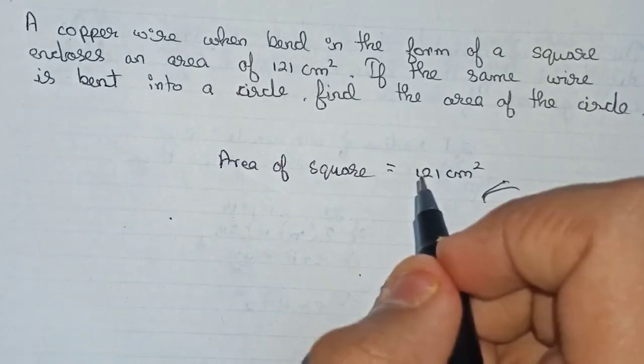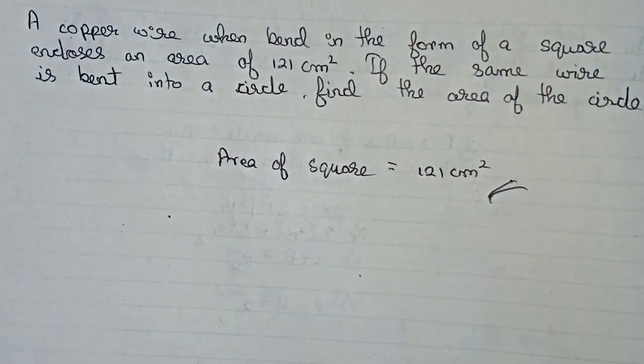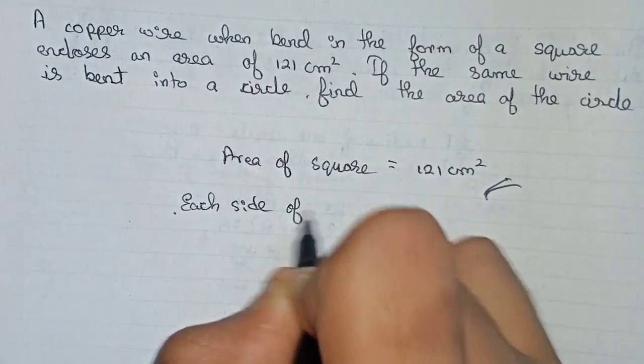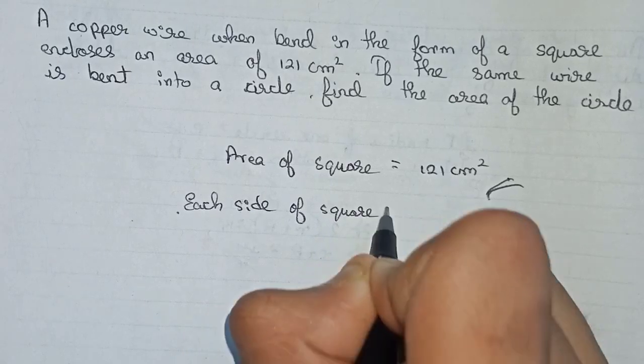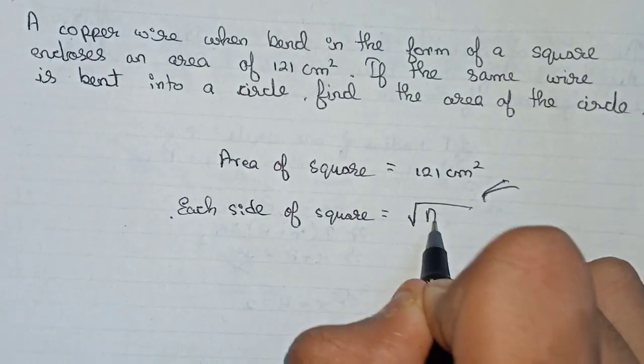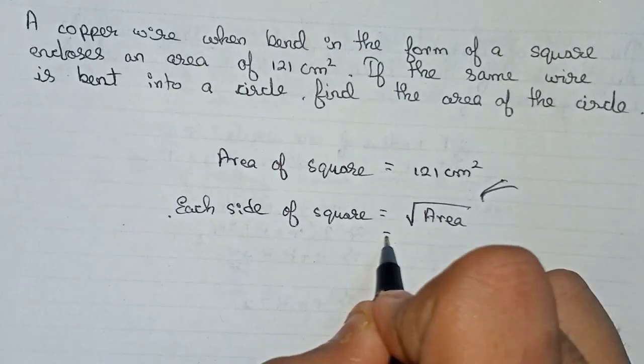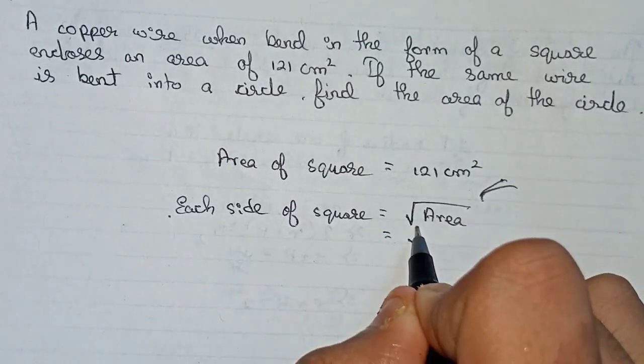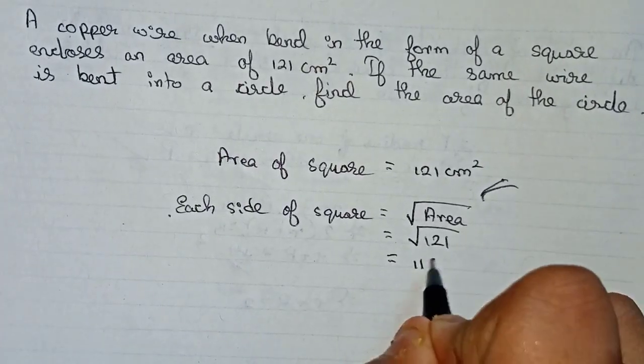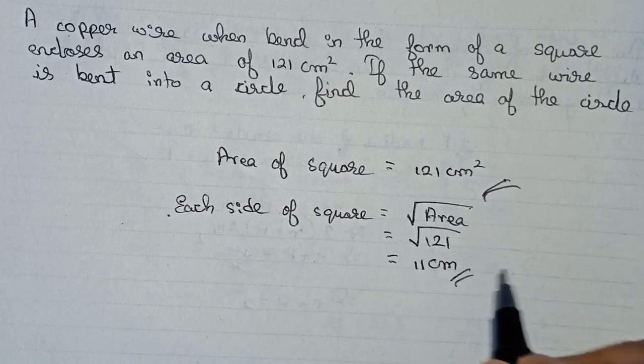So now you have to find out the perimeter, each side of the square first. So each side of square, the formula is root over area. So if we root over 121, root over 121 means 11. 11 centimeter is the side of the square.